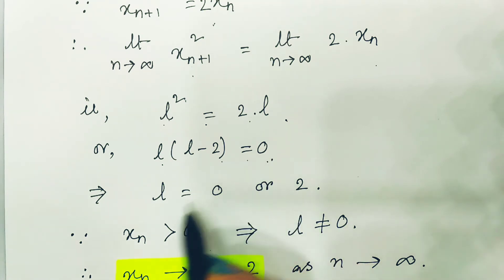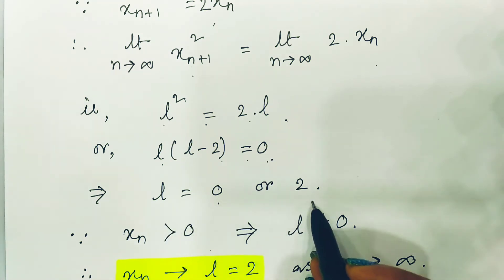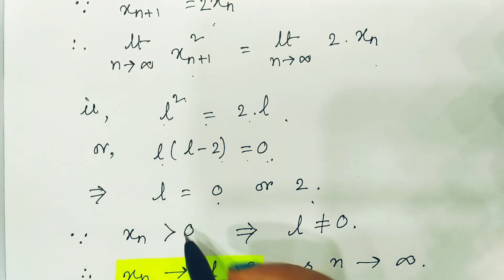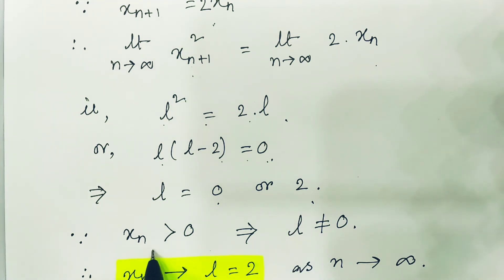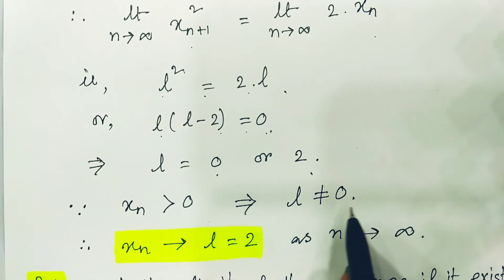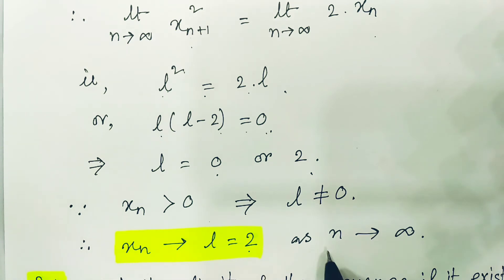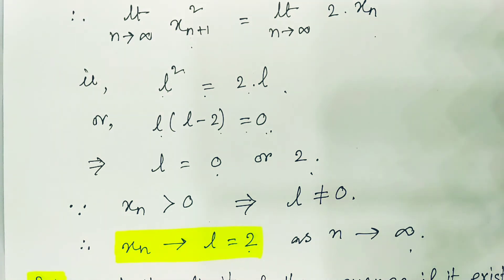This gives L·(L - 2) = 0, implying L = 0 or L = 2. But L cannot be 0 since all terms of the sequence are positive, meaning xn > 0 always. Therefore L = 2, and the sequence converges to the value 2. Hence the proof.